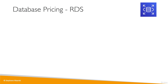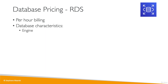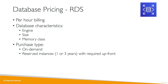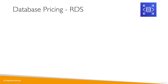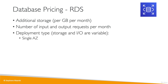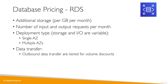For RDS database pricing, billing is per hour based on the engine type, size, and memory class. You can use on-demand or reserved instances for one or three years with up-front payment options. RDS backup storage up to 100% of your total database storage is typically free. You also pay for underlying storage in gigabytes per month, number of input/output requests per month, deployment type (single AZ vs. multi AZ, which means paying for two databases), and data transfer out — while data transfer in is free.